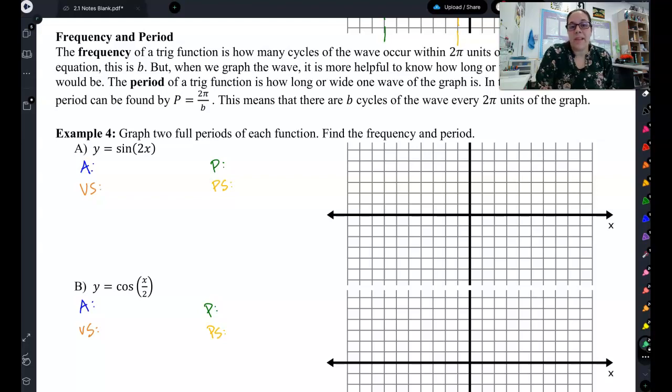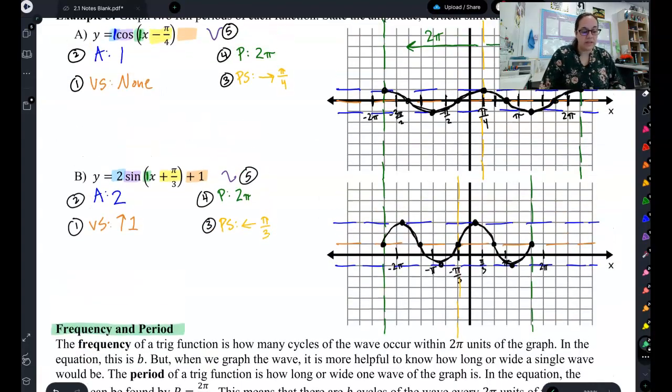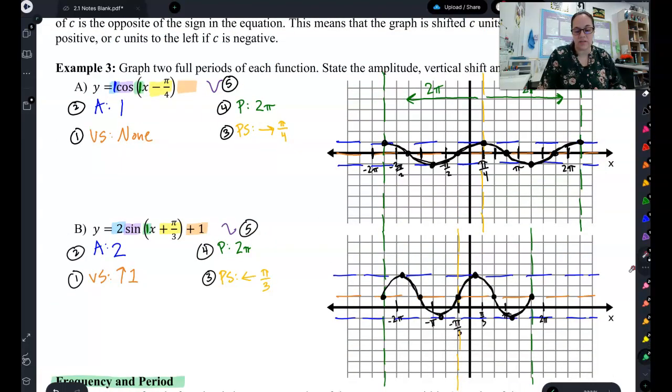Let's talk about the period, the last transformation. Now you may have noticed already that the rest of these numbers, we kind of just copy and paste from the equation. There's a 2 here, so this is a 2. This is a 1, so this is a 1. This is a pi-thirds, this is a pi-thirds.